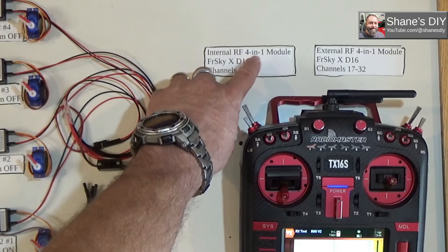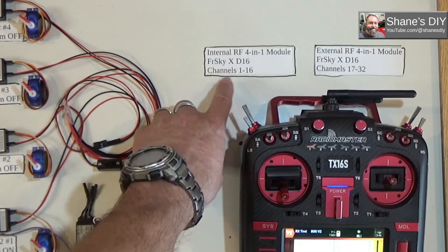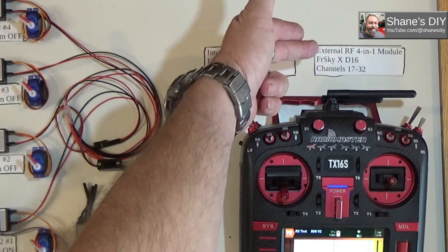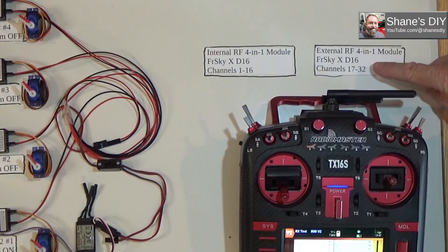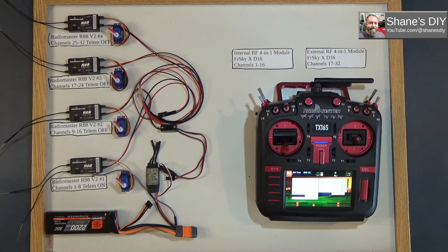The way you set this up: the internal RF is set for FRSky X D16 and you set channels 1 through 16. I'm going to go through all this on the radio just so you can see. External RF also the same protocol, and it is assigned to channel 17 through 32. So I'll show you how to do that.